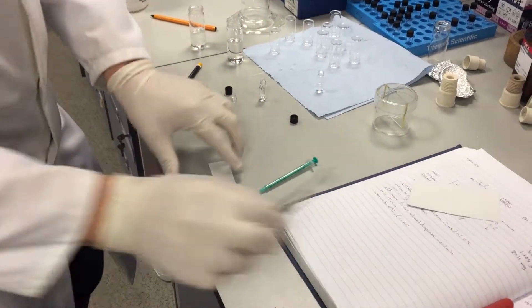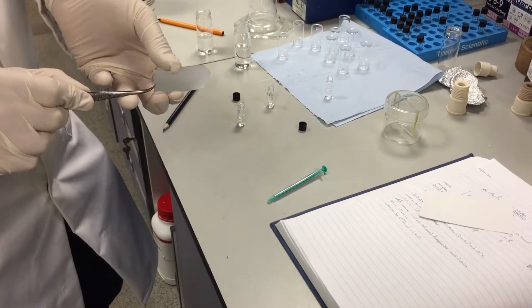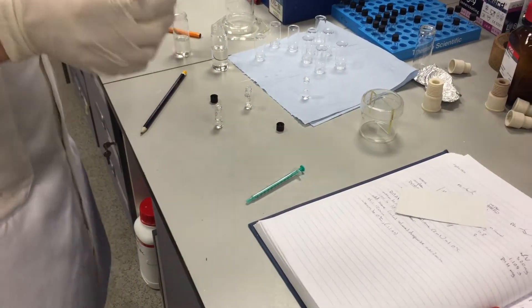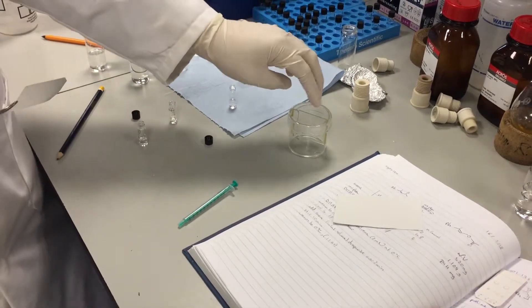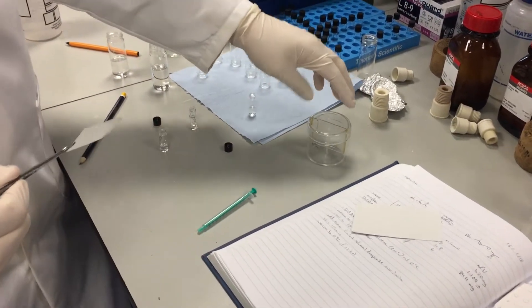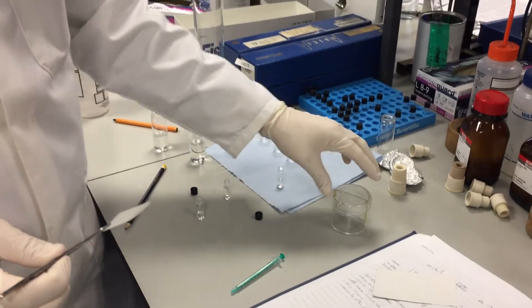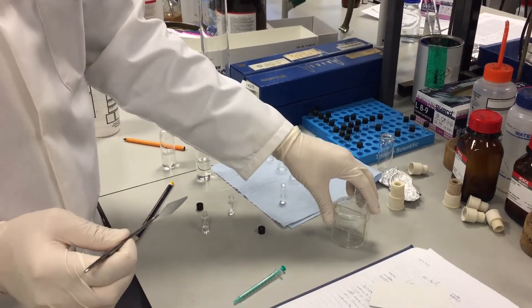We then take the TLC plate and put it into a TLC compartment. So here I've got an appropriate solvent mixture already. In this case it's 15% ethyl acetate petroleum ether and this will depend on every reaction that you do.